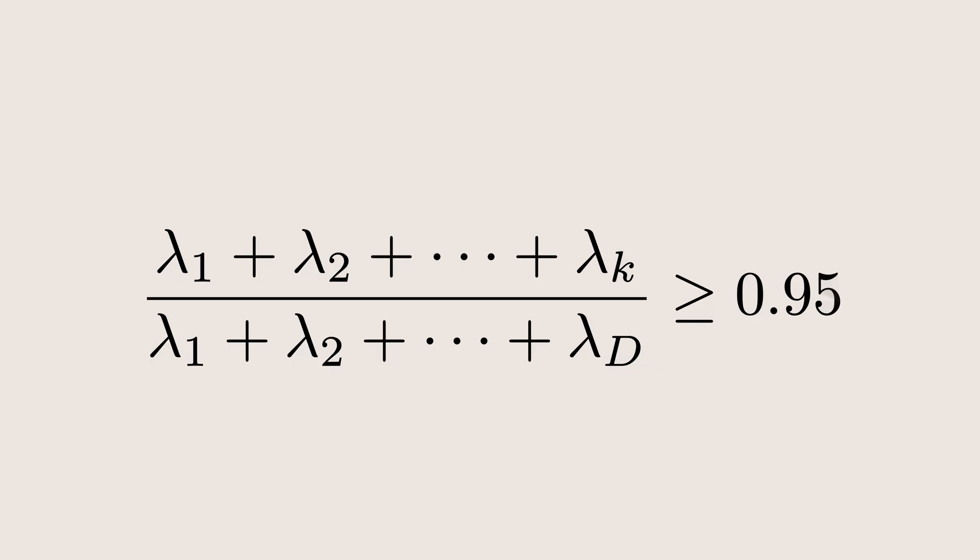For example, setting phi equals 0.95 means you retain 95% of the total variance using just the top k components.